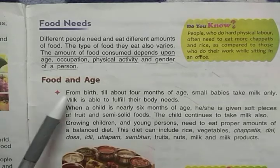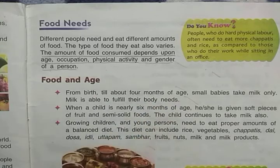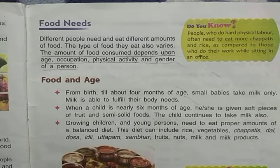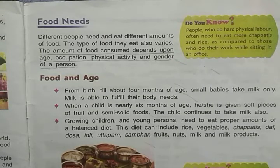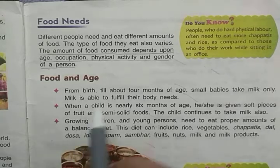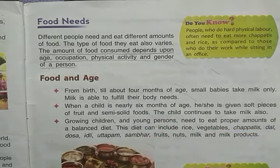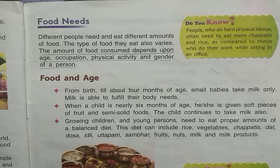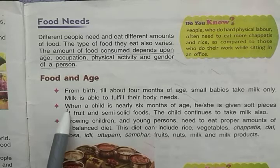From birth until about four months of age, small babies take only milk. They don't eat any type of solid food. They only drink milk until about four months of age. Milk is able to fulfill all their body needs and requirements.